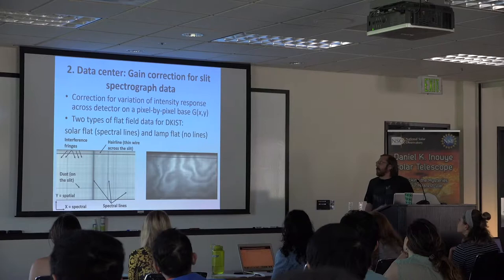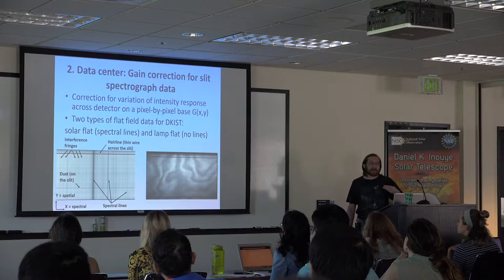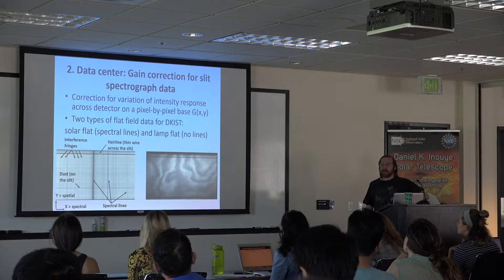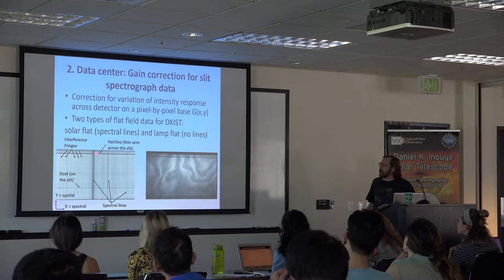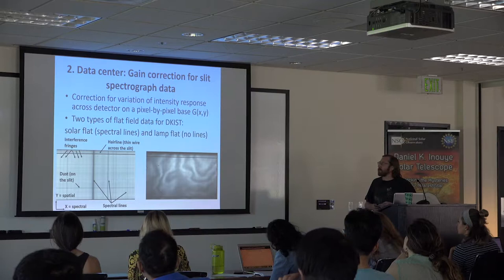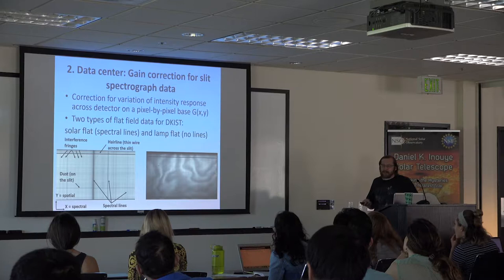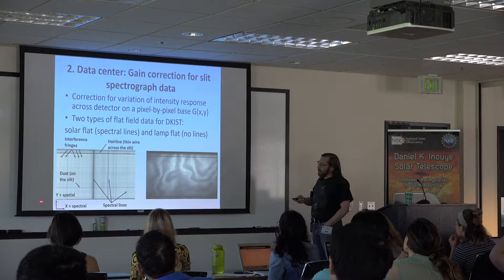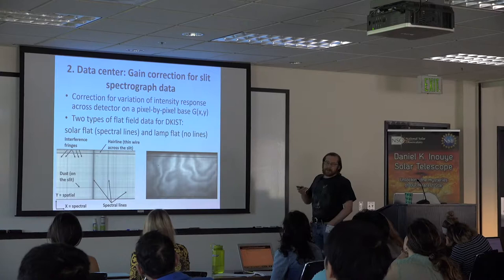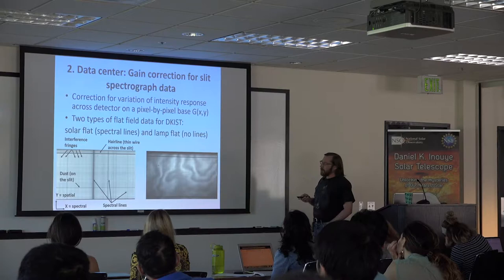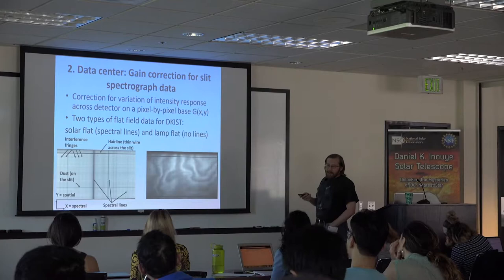How do you do the gain correction? The gain correction is pixel by pixel — each detector pixel can have a different response, specifically the linear intensity response. In some cases you have dust and dirt; a pixel gets lower intensity all the time but it's more or less a constant factor. Two types of data are used for the DKIST gain correction. One is the solar flat field, which is essentially an average spectrum containing everything that is also in your data. The x-axis is the spectral dimension, the y-axis is the spatial dimension along the slit. Vertical stripes are the spectral lines you want to observe, and some are interference fringes — everything that is not really a spectral line is something you want to correct for.